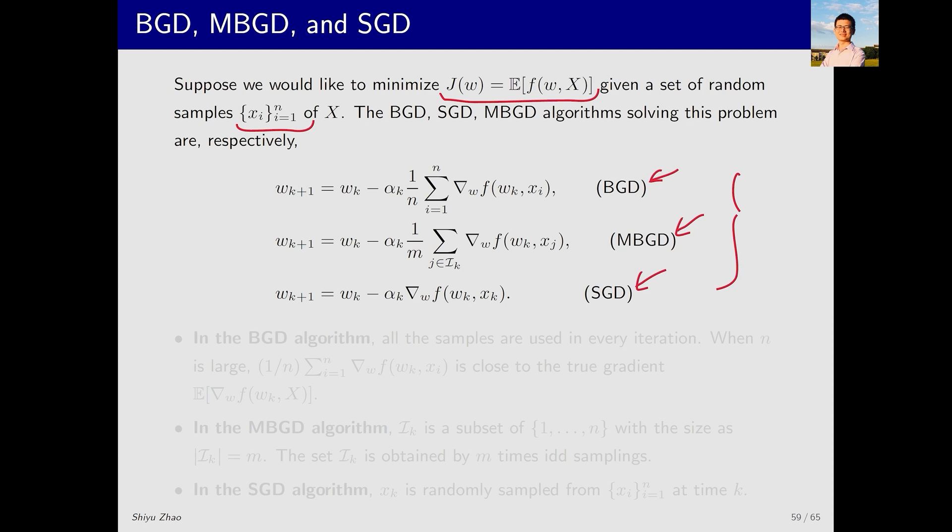For BGD, each time it uses all n samples to calculate the average. This can be considered the closest to the true expectation. For mini-batch gradient descent, not all samples are used. For example, if there are a total of 1 million samples,